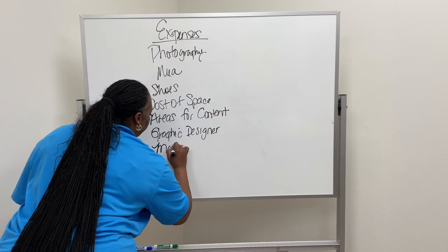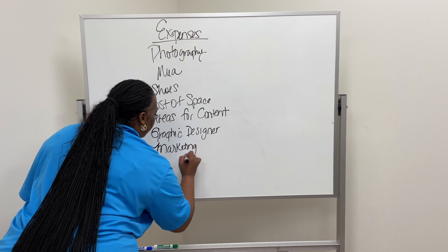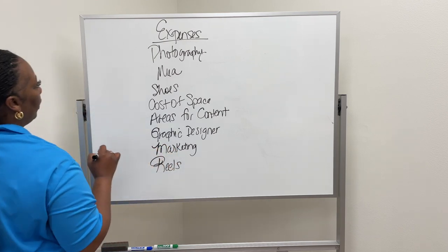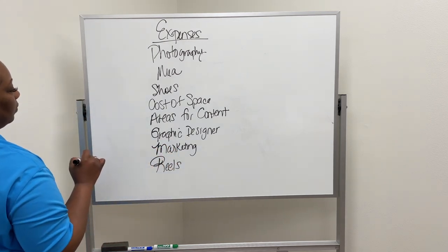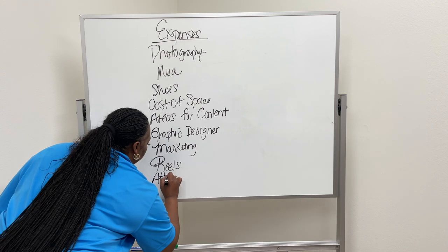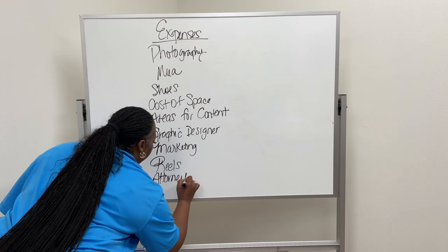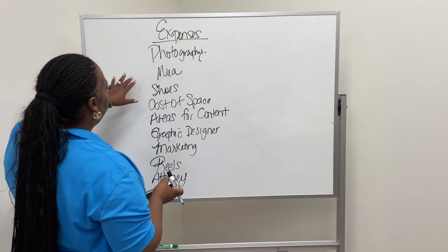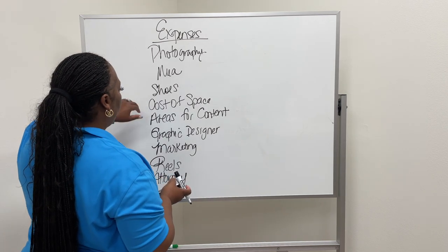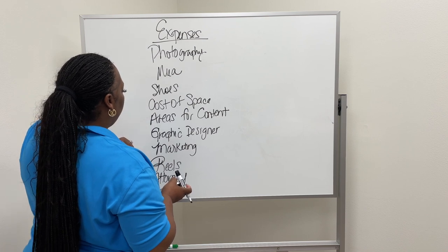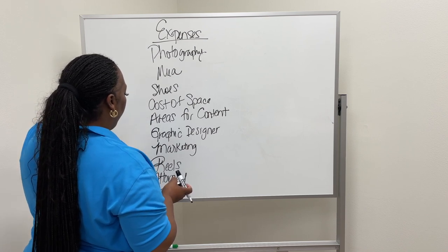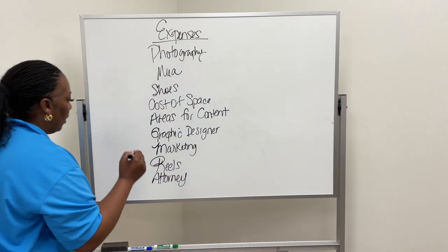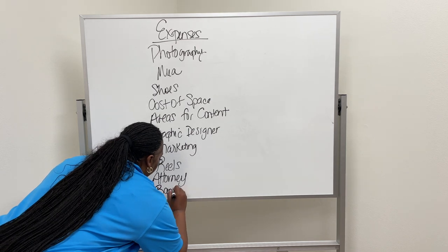You want to add in your graphic designer, marketing, reels. Let me see what else. Your attorney. I pay so many people I don't remember half of the time what I'm doing until the fees come out. So photography, makeup artists, shoes, cost of space, areas for content, graphic designer, marketing, reels, attorney. Banking is also another thing because we have banking fees.